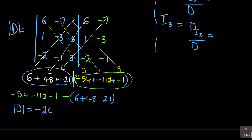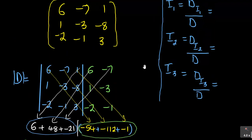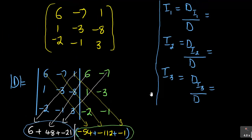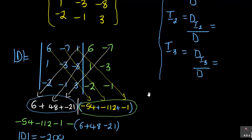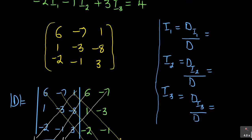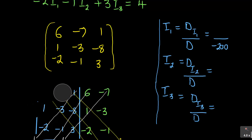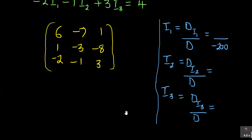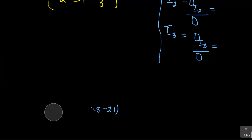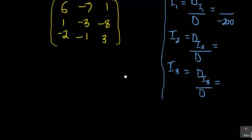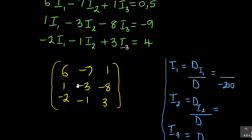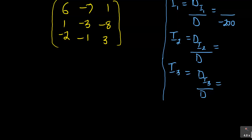So the determinant D equals −200. That is the first part. Now I need to find the determinants D(i1), D(i2), and D(i3). For D(i1), I replace the i1 column — which had coefficients 6, 1, −2 — with the constant values from the right-hand side of the equations: 0.5, −9, and 4.